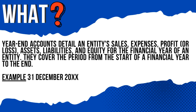Year-end accounts detail an entity's sales, expenses, profit or loss, assets, liabilities, and equity for the financial year. They cover the period from the start of a financial year to the end. Entities generally have a financial year — a 12-month year, just like the calendar year or the tax year. It can be different for each entity. For example, a year ending 31st December means the financial year runs from 1st January to 31st December. It's generally a 12-month period and the year-end accounts cover that whole period.